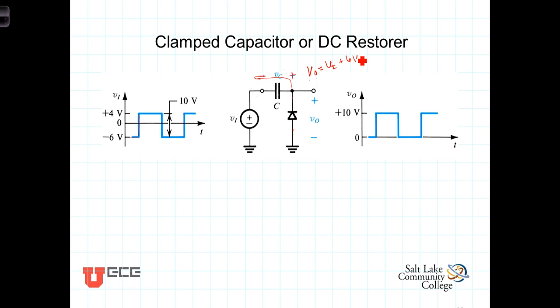That has the effect of adding as a DC component this lowest negative value in the waveform. So the lowest value here was six volts. The input signal has been raised six volts and it now goes from zero to ten volts.